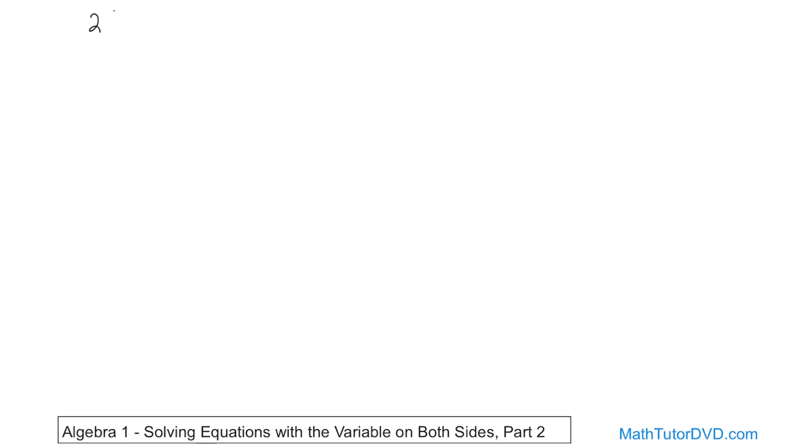So what if we have 2 times x minus 6 is equal to 3x and we want to solve for x. Obviously we have x wrapped up inside of this parentheses and we have the 3x on the right hand side.